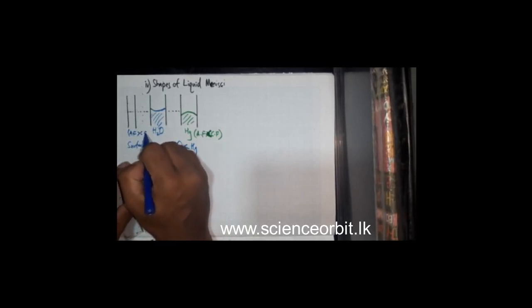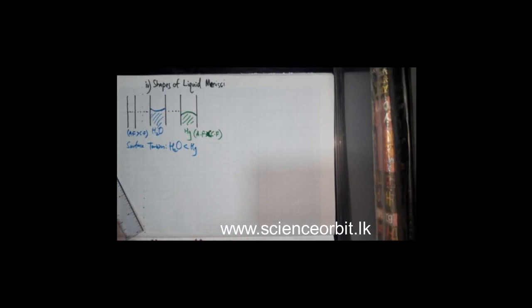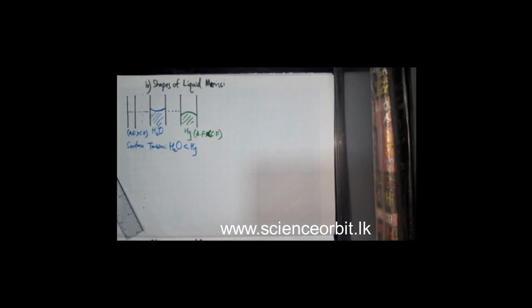On the other hand, in water, the adhesive forces will be more dominant than the cohesive forces. Water will interact more with the glass. So you can see water is wetting the glass more but mercury is wetting the glass less. That is the reason for the shapes of the liquid menisci.